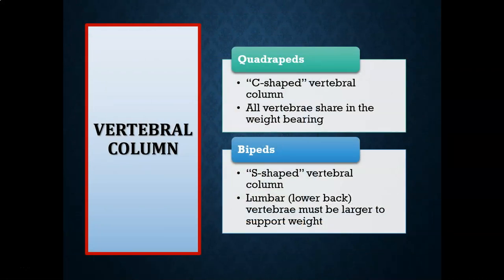The vertebral column is the next anatomical feature when comparing quadrupeds versus bipeds. Quadrupeds have a C-shaped vertebral column and all individual vertebrae are relatively the same size, because each vertebra is supporting about the same amount of weight. In comparison, a biped or hominin is going to have more of an S-shaped curvature to the vertebral column, and the lumbar or lower back vertebrae are going to be much larger because they're supporting much more weight. Lumbar and thoracic back pain is still one of the number one reasons modern humans visit a general practitioner.